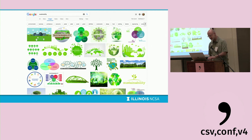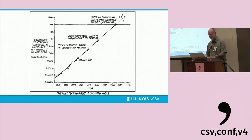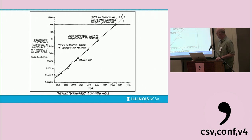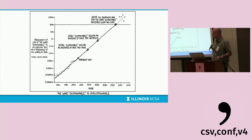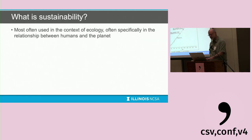It's also kind of round, it's got a tree in the middle. There's also a cartoon showing the use of the word 'sustainability' over time, which suggests that by 2109 every sentence and every word will include 'sustainable' — which is probably bad.